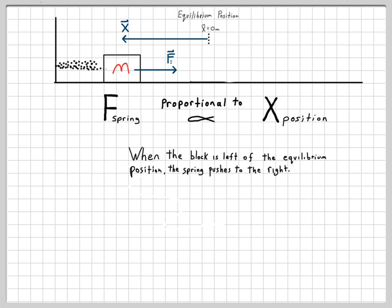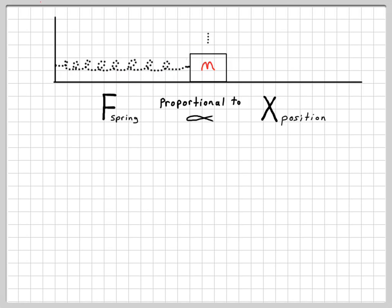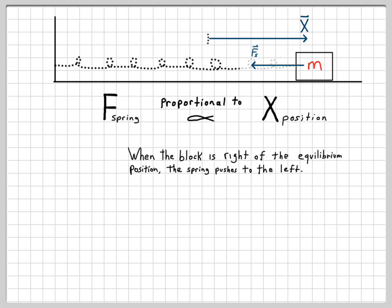And then when the block is to the left of equilibrium, and it has a negative position, the spring is pushing to the right. So it's interesting to notice that. Back to equilibrium position again. And then over here, when the block is in a positive position, the spring is pulling in the negative direction, or leftward.